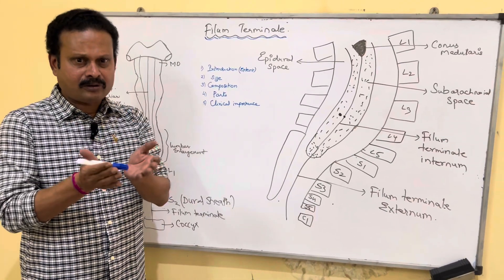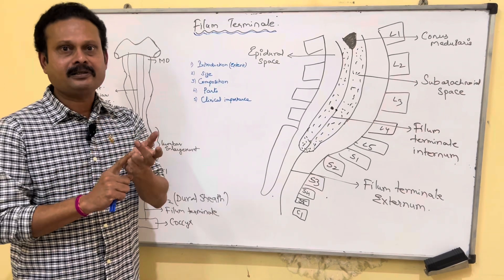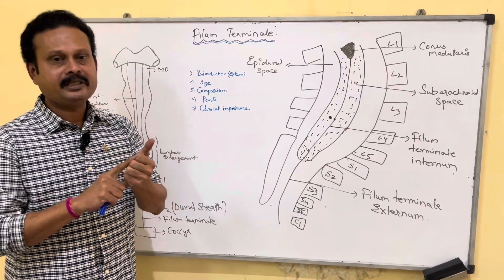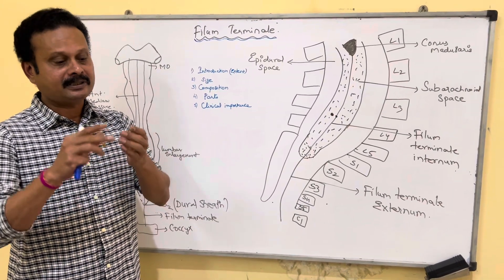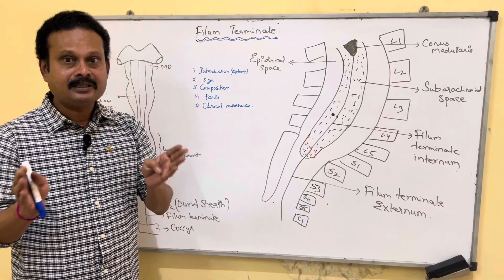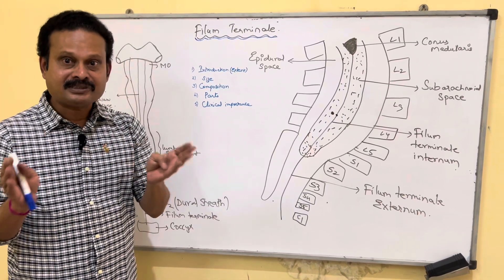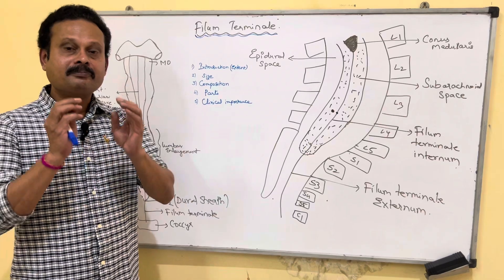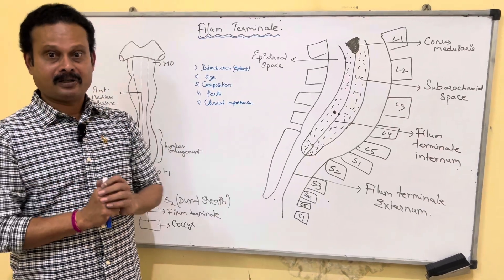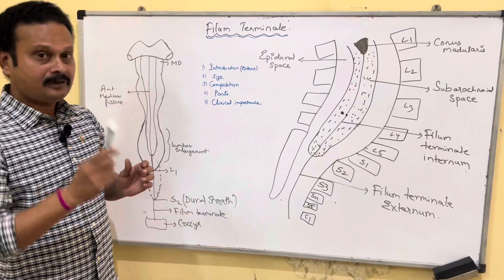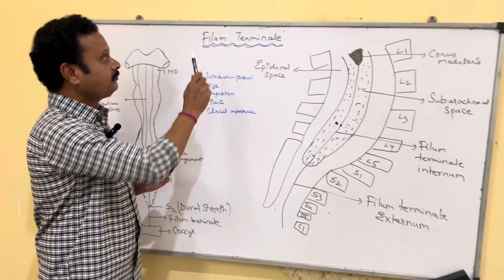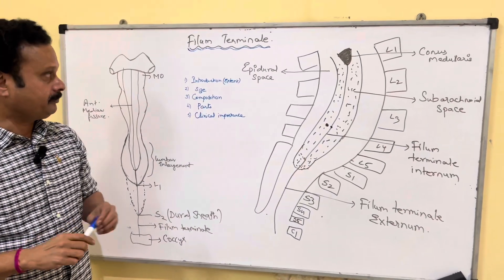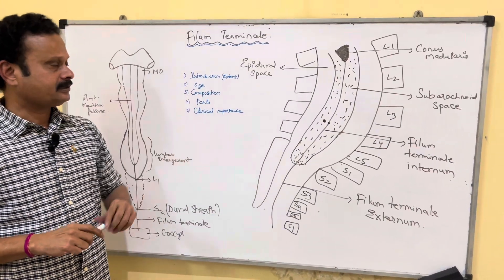These four — filum terminale, subarachnoid septum, ligamentum denticulatum, and linea splendens — are the extensions or processes or special parts of the pia mater of the spinal cord. Now let us focus on filum terminale specifically.